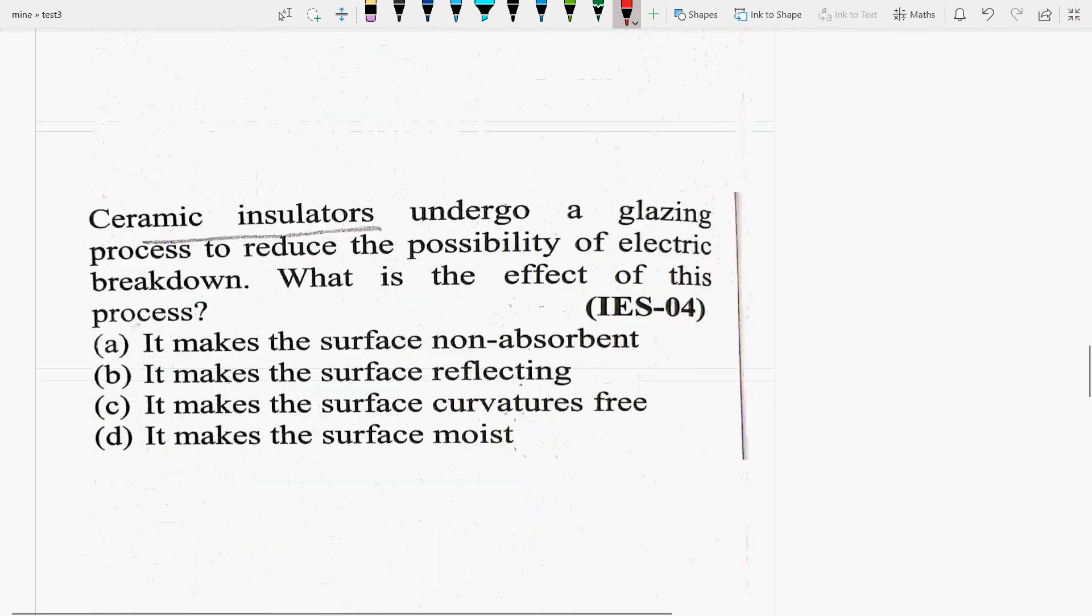Next is, Ceramic insulators undergo a glazing process to reduce the possibility of electrical breakdown. What is the effect of this process? It makes the surface non-absorbent. It makes the surface reflecting. It makes the surface curvatures free or it makes the surface moist. See, in this question, what happens? Ceramic insulators have glazing process so that the electric breakdown can reduce the effect.